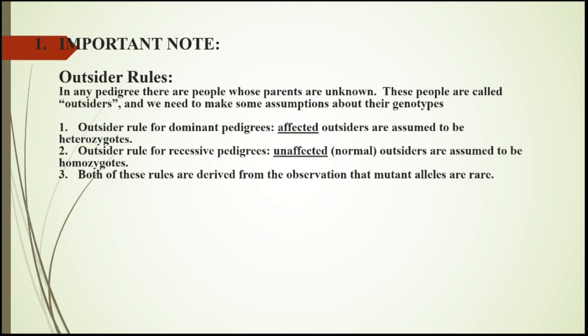For recessive pedigrees, an unaffected (normal) outsider is assumed to be homozygous dominant — either capital R capital R, or the normal homozygous form. These rules are derived from observation of genotypes and are applicable under the assumption that mutations are rare, meaning these laws apply only where mutation has not occurred.